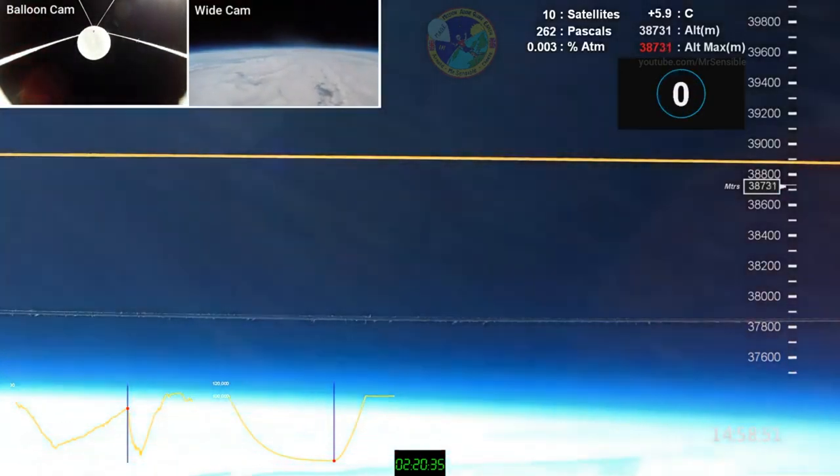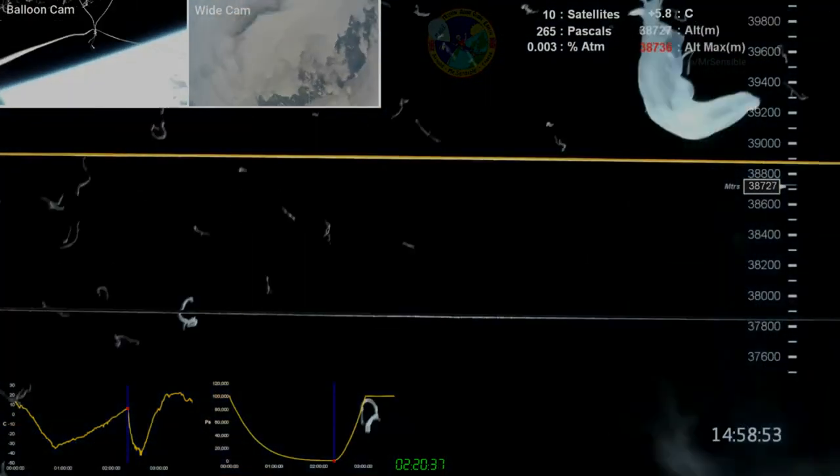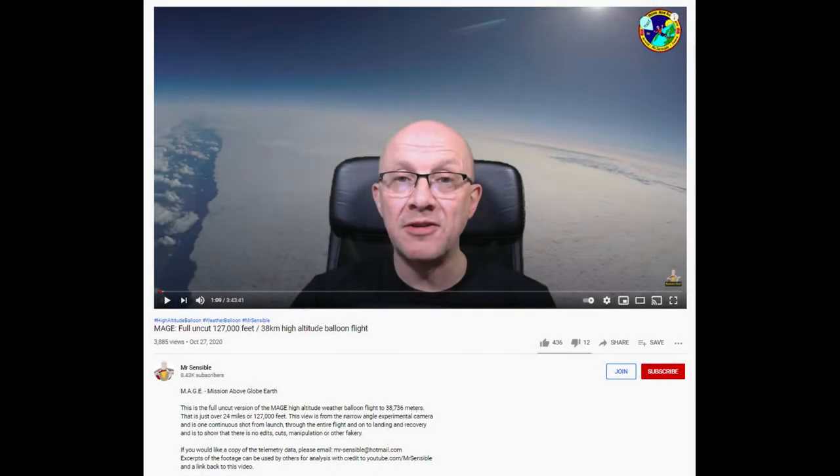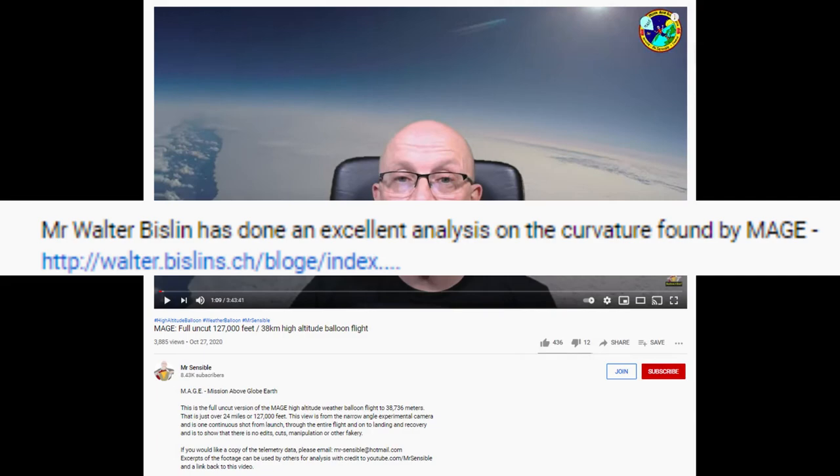Now, when you go to Mr. Sensible's video, he begins with the typical wide-angle lens fake curvature playing in the background. Using wide-angle lenses to fake the curvature is pretty much a standard for all ball earth proponents. I guess the actual Flat Horizon video wouldn't have looked so awesome for Mr. Sensible. But in the description of his video, Mr. Sensible linked to a website by globe propagandist Walter Bislin, who conducted his own bogus analysis of Mr. Sensible's video.